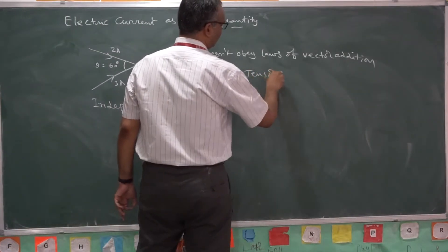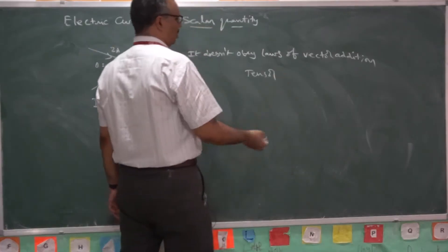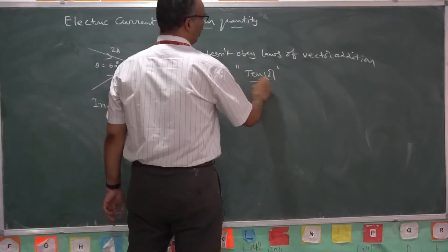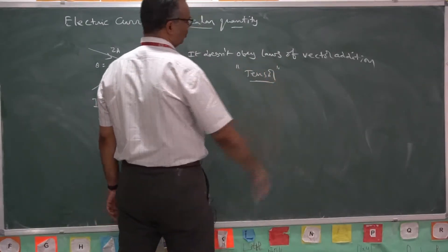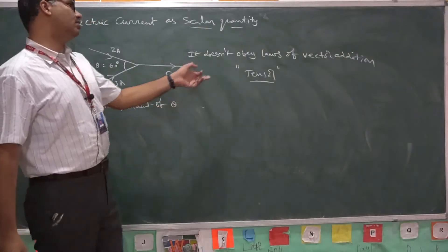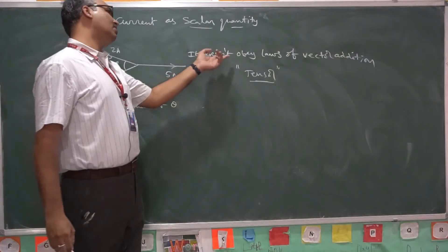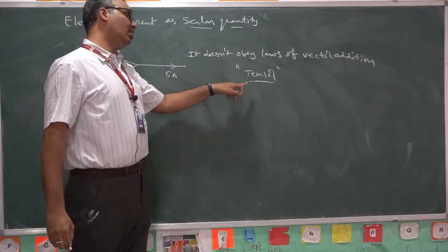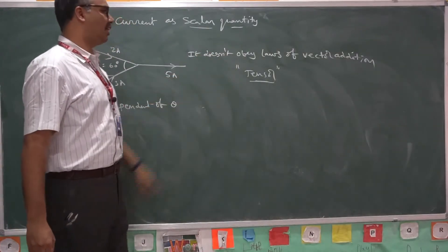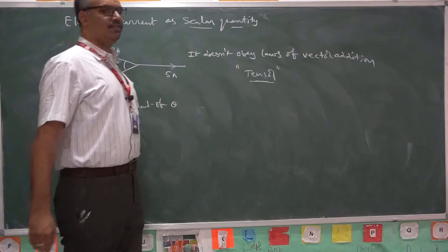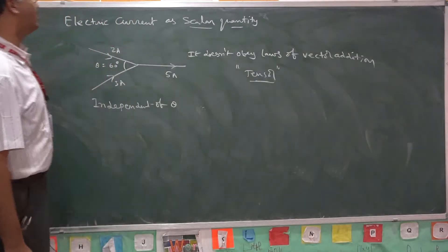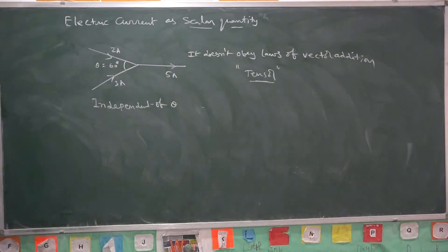Tensor means in different directions it will have different magnitudes. If suppose in options, in the place of scalar they give tensor, this is also a right answer. So electric current is a scalar quantity.